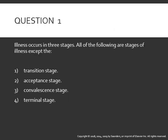Illness occurs in three stages. All of the following are stages of illness except: one, the transition phase; two, the acceptance stage; three, the convalescent stage; or four, the terminal stage. The answer is number four — terminal stage. There are three stages of illness: the transition stage, which is the onset of the illness; the acceptance stage, which is the sick role when you're actually going through the sickness; and the convalescent stage, which is the recovery phase.